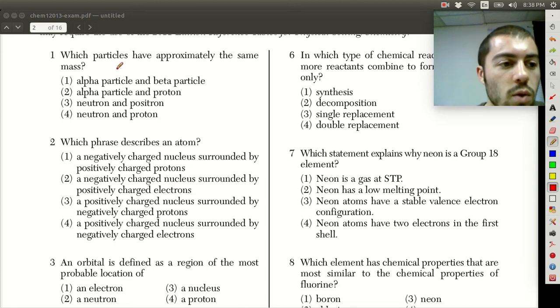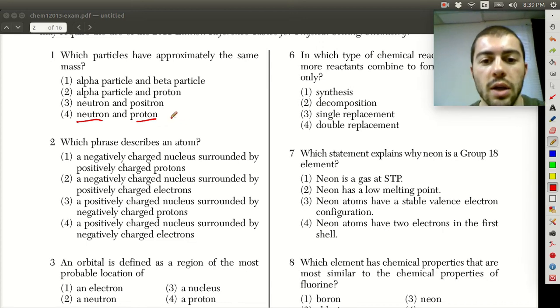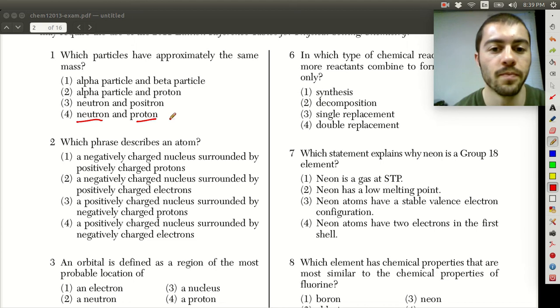The first one asks us which particles have approximately the same mass. So this goes back to the very beginning of the year when we talked about atomic structure and we said that neutrons and protons both have a mass of one unit in terms of these mass units that we're considering, one atomic mass unit. Electrons remember have such a small mass compared to the neutrons and the protons that we can consider them negligible. So neutrons and protons both have a mass of one, electrons have a mass of zero.